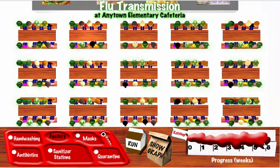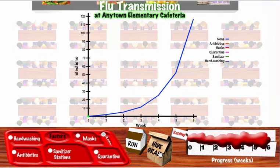Biohazard symbols will appear over the heads of the students who have contracted the flu. When the ketchup finishes spilling and time is up, click the Show Graph button on the lunch bag. This will bring up a graph that shows the number of flu infections over time for each factor.